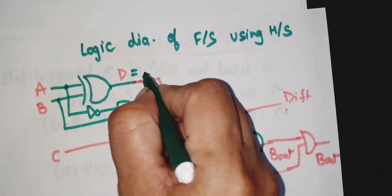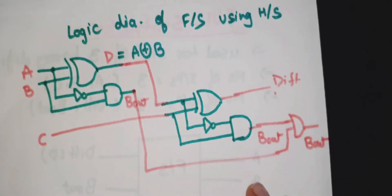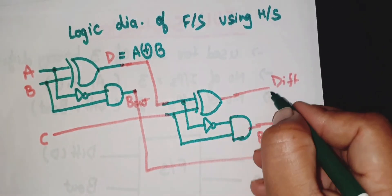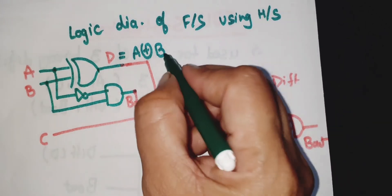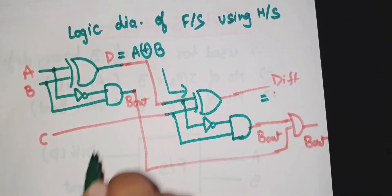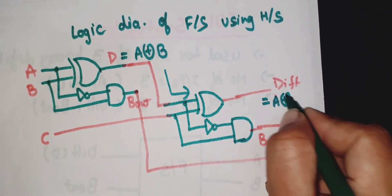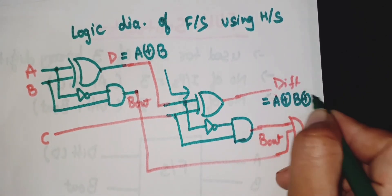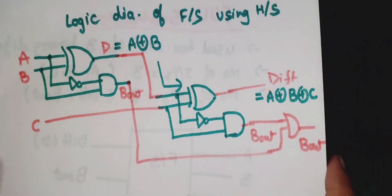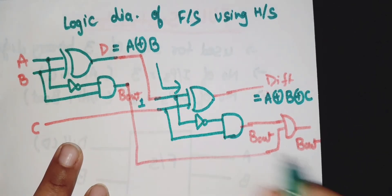Now the expression: the difference here is A XOR B. Then that value is XORed with C, meaning A XOR B works as input here. So the final difference is A XOR B XOR C.